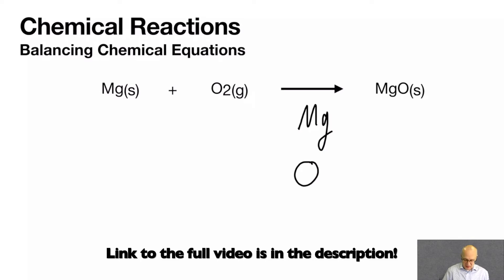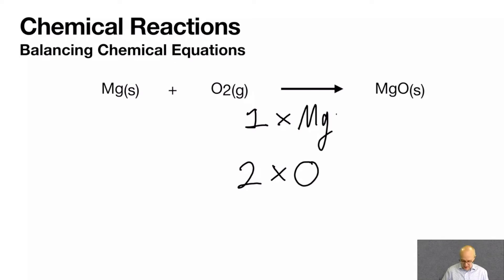On the left-hand side of the arrow, how many magnesium do I have? Well, I have one. On the left-hand side, I have two. Oxygen. So there's one magnesium and one oxygen. We're trying to make the oxygen on the left equal the oxygen on the right.